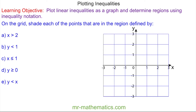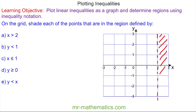So for question a we have x is greater than 2. Well this is when x is equal to 2 anywhere along this vertical line — again the y values change but x is always 2. And because it has to be greater than, we're going to use a dashed line because it cannot be equal to. And we're going to the right where the numbers get bigger. So this would be the inequality x is greater than 2.